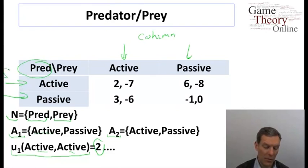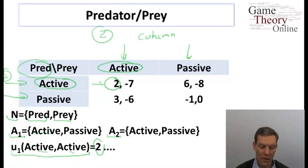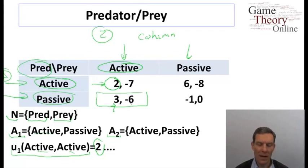So player one is often listed as the row player. Player two is often listed as the column player. So we have the predator as player one, the row player, and player two as the column player. And then the entries in the normal form then indicate what the payoffs are. So the row player's payoff generally comes first. So if they're playing active and active, then the predator, who's player one, the row player, is getting a payoff of two. So each cell lists the two players' payoffs as a function of what the actions are. So if they're passive and active, then the predator is going to get a payoff of three, and the prey will get a payoff of minus six, and so forth. So this is what's known as the normal form representation of a game or a game in strategic form.